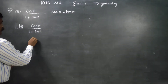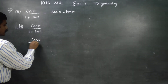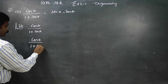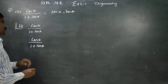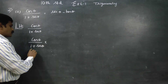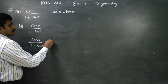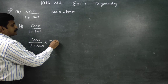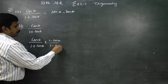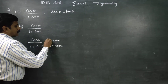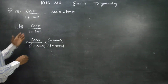In the first stage, we will multiply the numerator and denominator by the conjugate. The conjugate of (1 + sin θ) is (1 - sin θ), so we multiply by (1 - sin θ) over (1 - sin θ). In the LHS, I will multiply this.